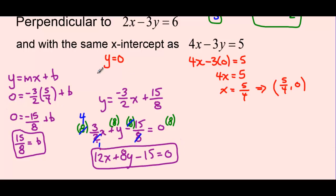This becomes pretty routine. These questions may prove difficult because we need to figure out what our slope is going to be based on whether the line is parallel or perpendicular. Parallel slopes will be the same slope. Perpendicular slopes will be negative reciprocals. And then we may have to find another point — if it's a y-intercept, that's easy to read. For an x-intercept, remember we can set y equal to 0 and figure out what that is, or maybe we're just given the point directly.